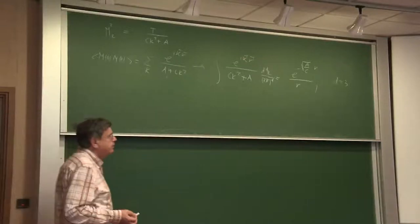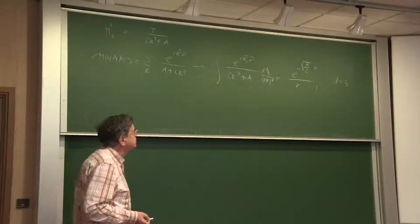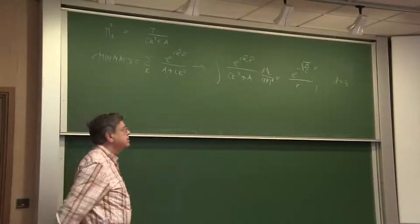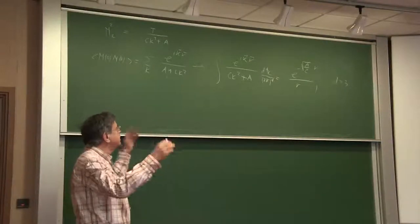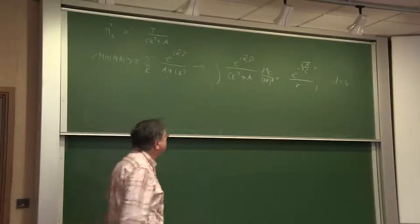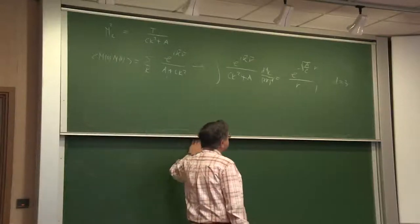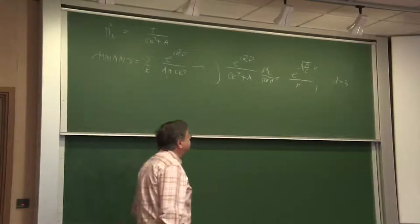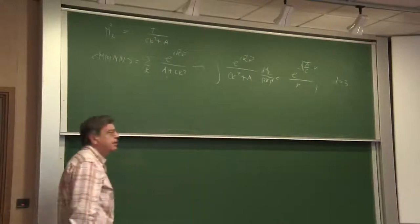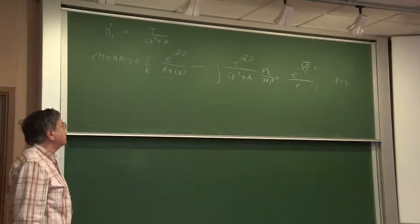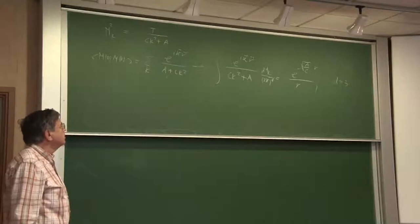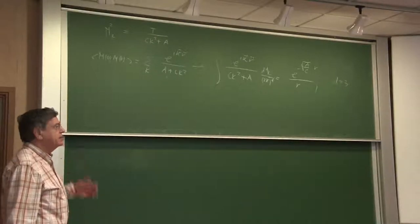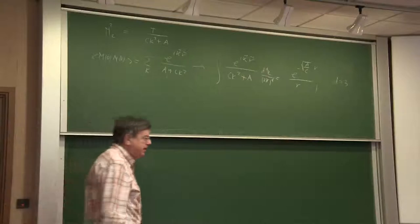For the ordered phase, you have long range order; for the disordered phase, you have some order at short distances, but then this disappears. So now I sketch what people really know how to do. If one is near the transition, what is the problem of criticality?